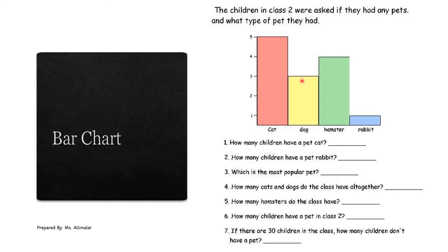Look at dog — it stops at three, so three students from Year 2 have dogs as a pet. Hamster — four students have a hamster as their pet. Rabbit — only one student has a rabbit as a pet. Now, question one: how many children have a pet cat? The answer is five, so write five there.